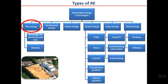Let's go back to the renewable energy classification. The first type is bioenergy. As you can see, bioenergy can be used to produce electricity, to produce heat, and also for biofuels.